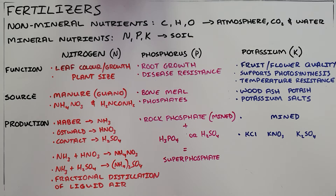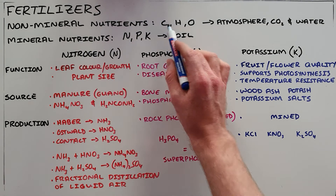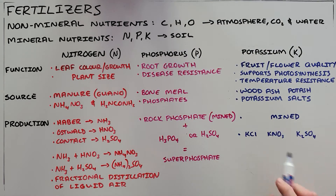There are a number of theoretical items that need to be understood for this section. First is that plants require non-mineral nutrients — those are considered carbon, hydrogen and oxygen — and those are obtained from the atmosphere via carbon dioxide and water.